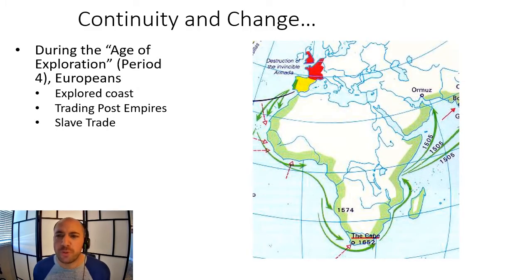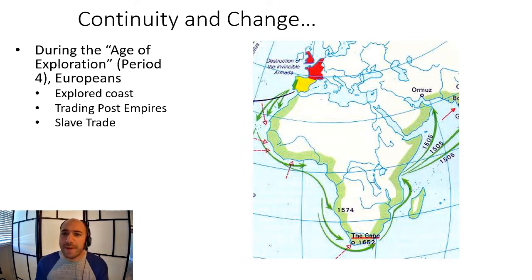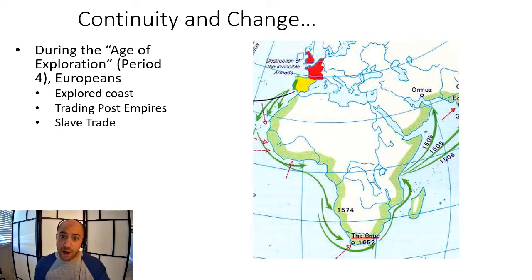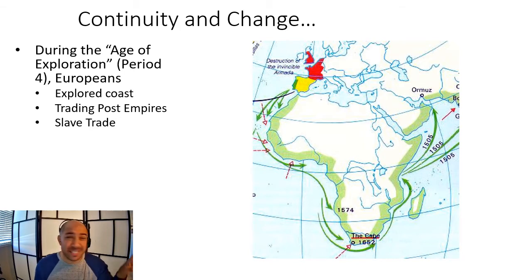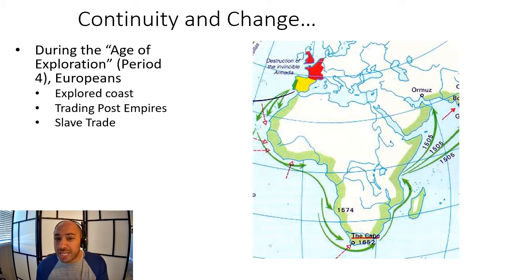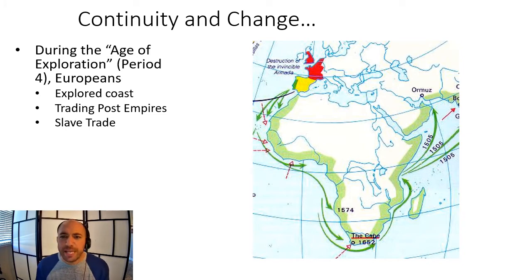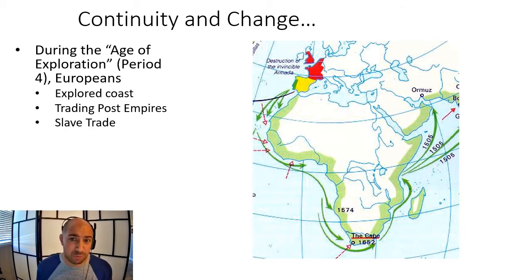It's important to understand that the growth of European political and economic control of the world is not a change in period six, but is a continuity from period four. Going back to the early 15th century, Portugal under Henry the Navigator had begun — followed by other European powers — to explore the coast of Africa during the age of exploration, establishing trading post empires and engaging in the slave trade. By the mid-19th century, European control of Africa remained confined mostly to coastal areas for technological, medical, and economic reasons.